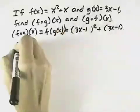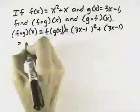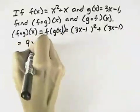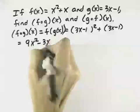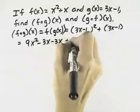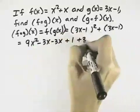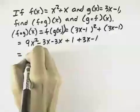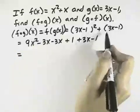And if we simplify that, 3x minus 1 quantity squared means to multiply it by itself, so that we get 9x squared minus 3x minus 3x plus 1, and then we have plus 3x minus 1 for our second part of the problem.